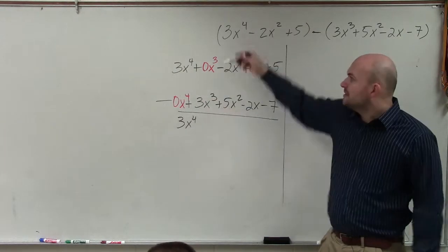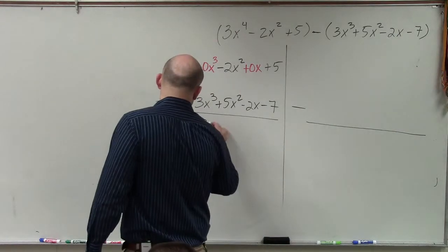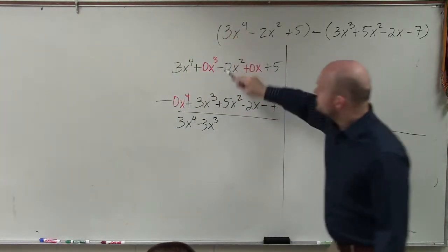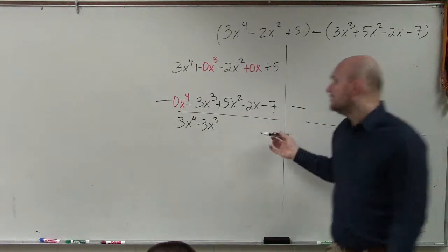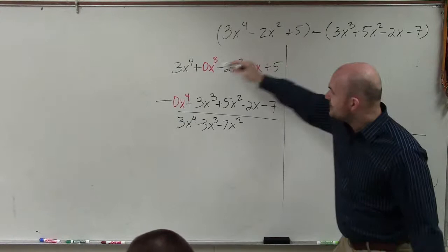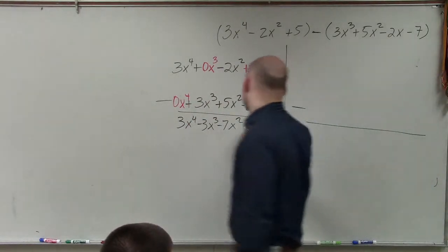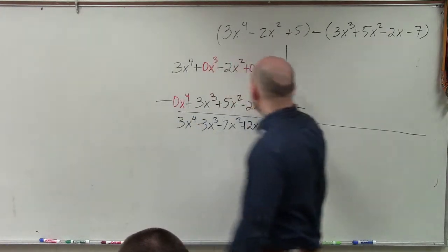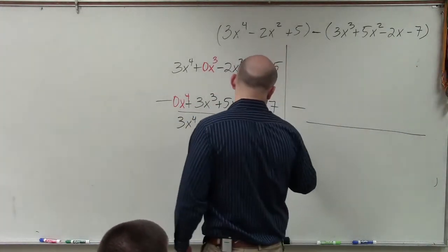Now, I do 0x cubed minus 3x cubed. That's going to give you negative 3x cubed. You could also do negative 2x squared minus 5x squared. That gives you a negative 7x squared. 0x minus a negative 2x. Remember, minus a negative will give you a positive 2x. And then 5 minus a negative 7 will give you a positive 12.